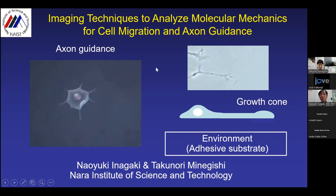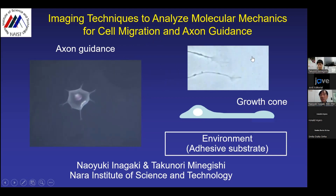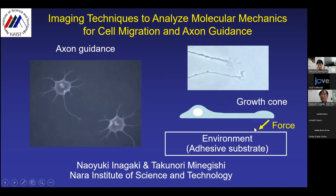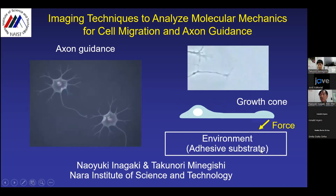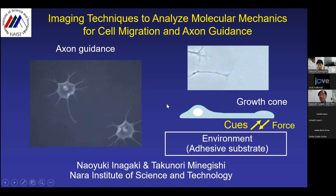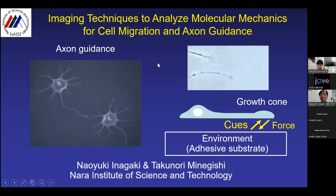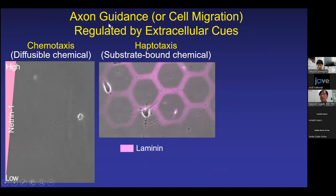To form a proper neural network, axons have to be navigated toward the right destination in a process called axon guidance. At the tip of the extending axon, there are highly motile structures called growth cones. To move forward, growth cones have to produce force onto the environment, which serves as an adhesive substrate. The direction and speed of growth cone migration is regulated in response to environmental cues. Similar bidirectional mechanical and chemical interactions are also required for cell migration.